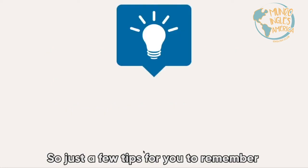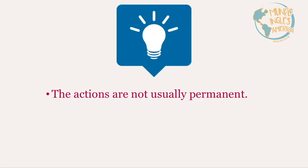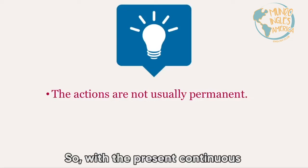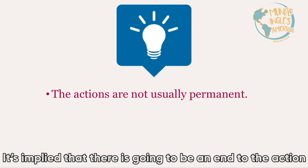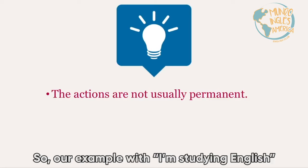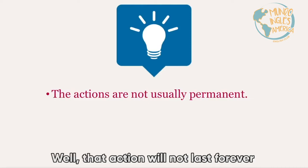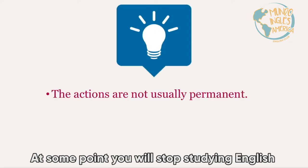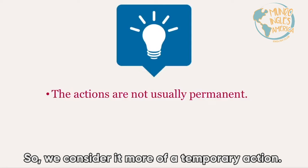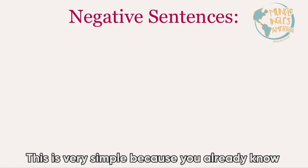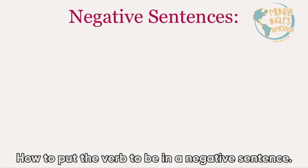We also use the present continuous for a longer action currently in progress — for example, 'I'm learning English.' A few tips to remember: the actions are not usually permanent. With the present continuous it's implied that there will be an end to the action. For example, 'I'm studying English' — that action will not last forever, so we consider it more of a temporary action.